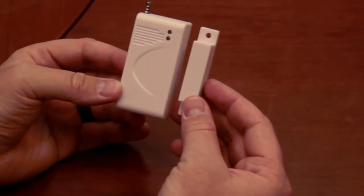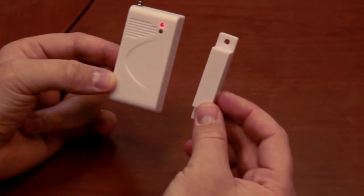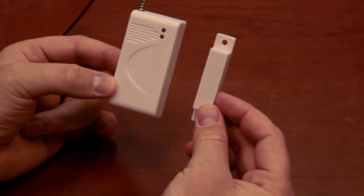Here we have the SO2 window and door contact. As you can see, the bigger part here is the transmitter and the smaller part on my right hand is the magnet.